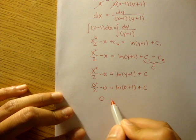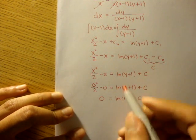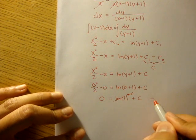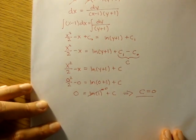So on this side, we get 0 is equal to ln of 1 plus c. And ln of 1 here, well, that's 0. So we find out that c is equal to 0. Well, that's kind of a good thing.